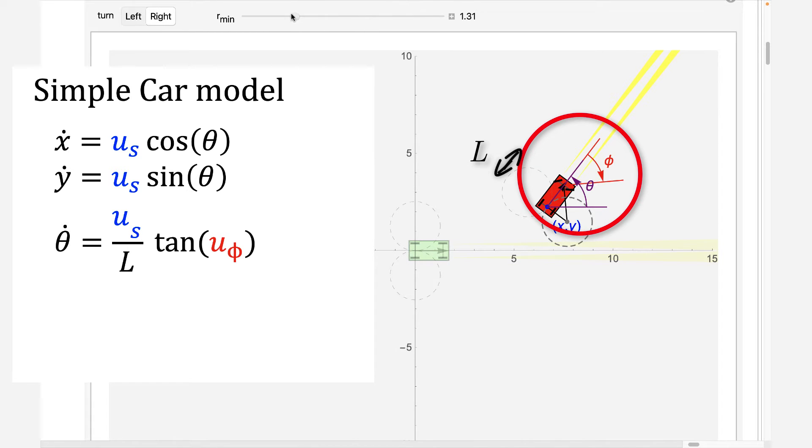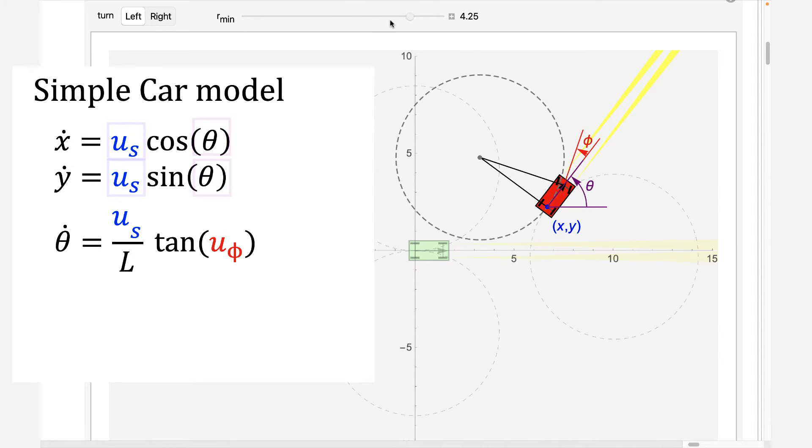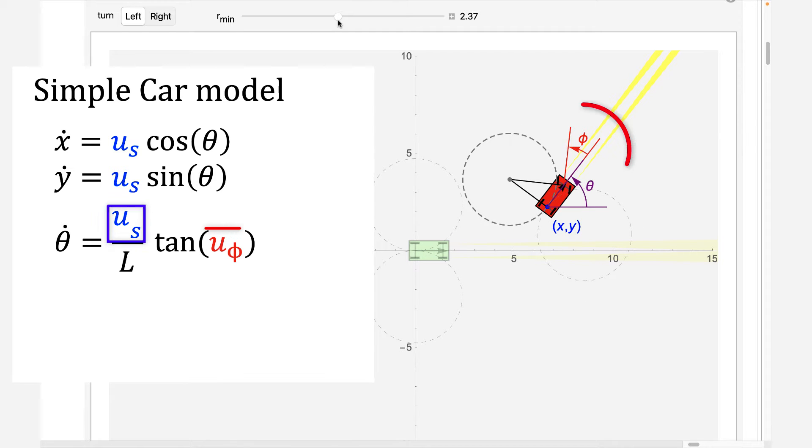The differential equations for the system show that the change in x and y is determined by the current orientation of the car, theta, and the speed of travel, u-s. The change in orientation is controlled by the current speed and the steering angle, phi.